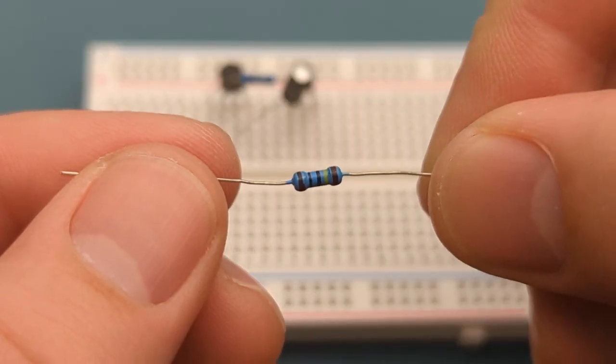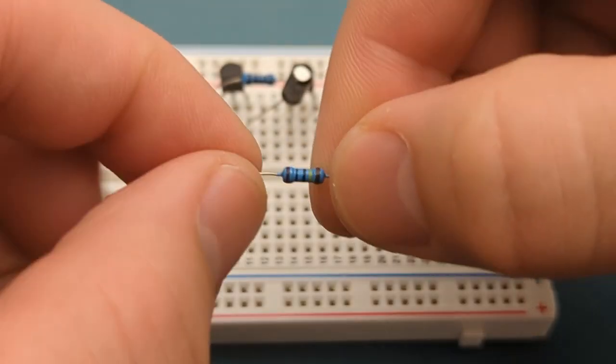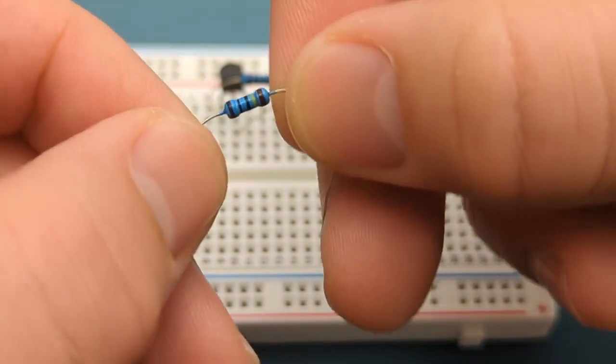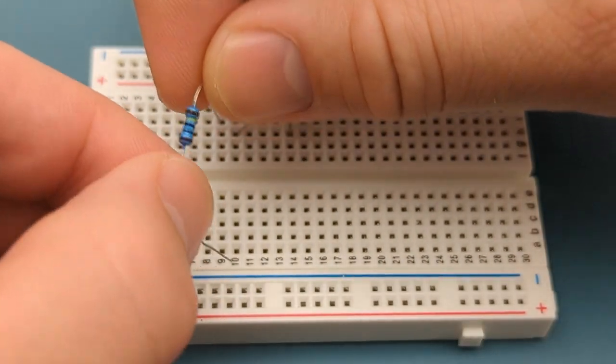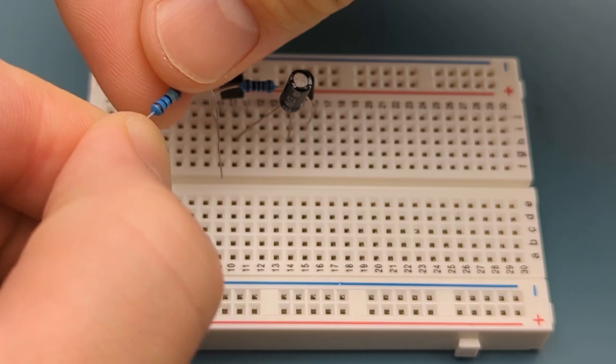Bend the ends of a 1 megaohm resistor. Insert the 1 megaohm resistor into the base of the BC557 and the negative rail.